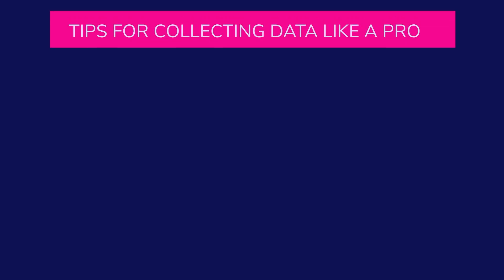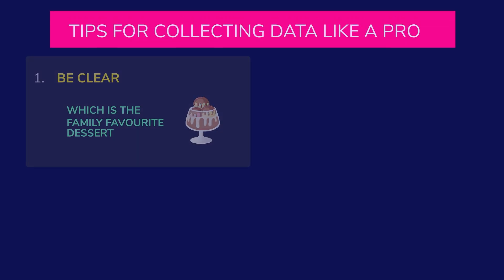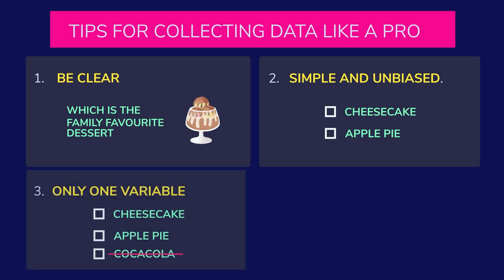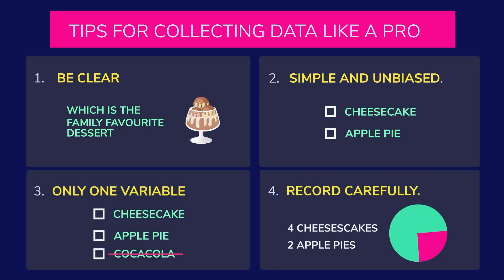Tips for collecting data: 1. Be clear about what you want to know so the results can be accurate. 2. Make survey questions simple and unbiased. 3. Change only one variable at a time for experiments. 4. Record your results carefully.